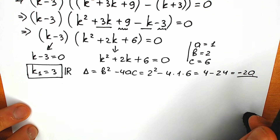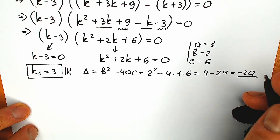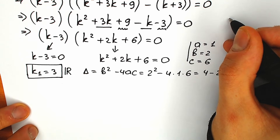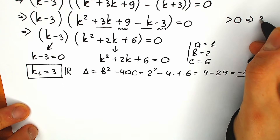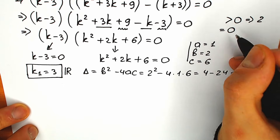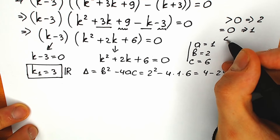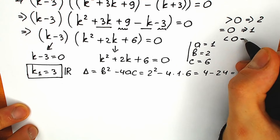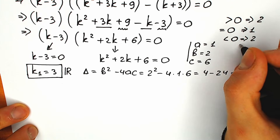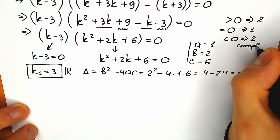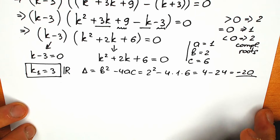Just remember one really important tip: when the discriminant is positive, we have two real roots; when the discriminant equals zero, we have only one root; and when the discriminant is less than zero, we have two complex roots. This is a quick reminder for you.